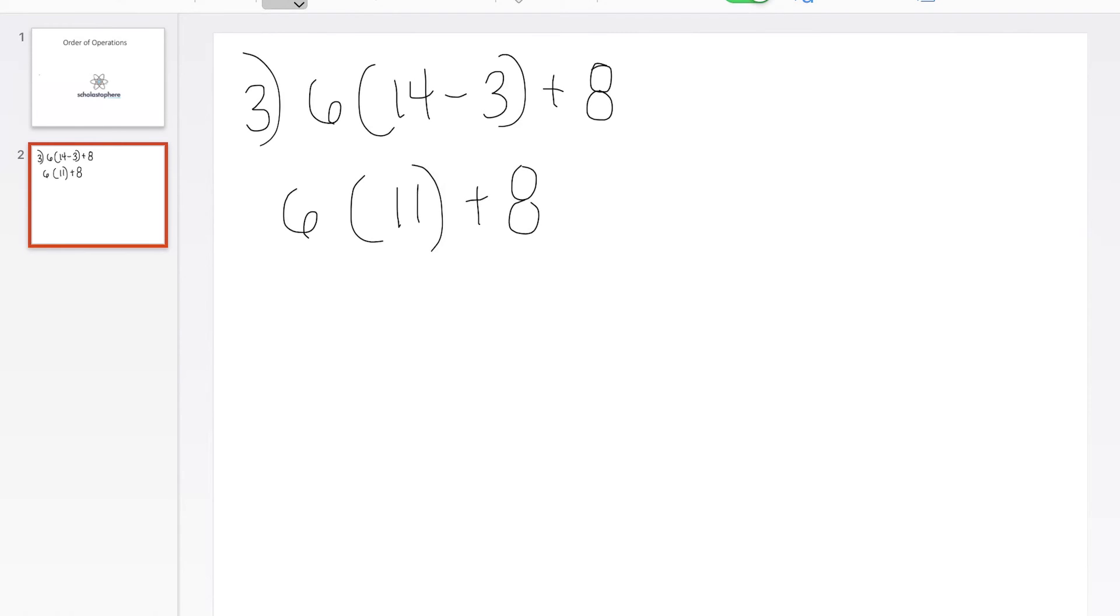So we're going to multiply that 6 or distribute that 6 times 11. That gives us a 66. So we're going to bring down a positive 8. The new sentence should say 66 plus 8, and that is equal to 74.